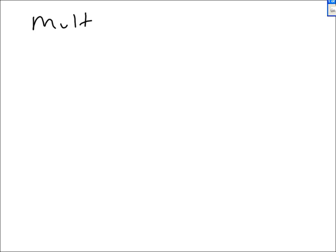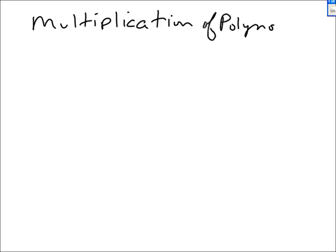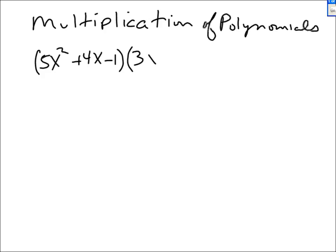Section ten is still dealing with polynomials. We are going to talk about multiplication of polynomials. We have two polynomials: 5x squared plus 4x minus 1, one polynomial times another polynomial, 3x cubed plus 7x plus 2.